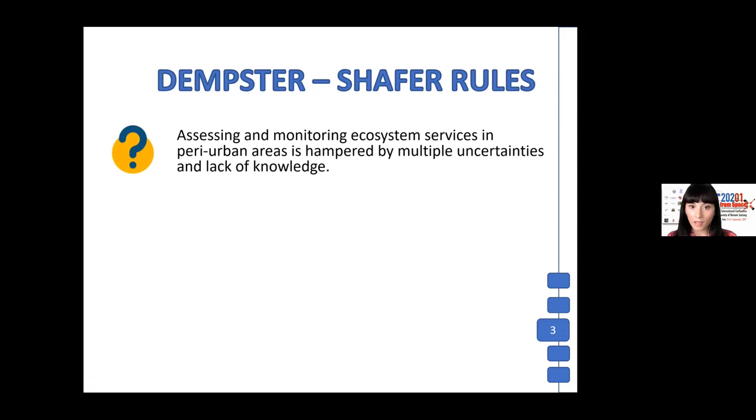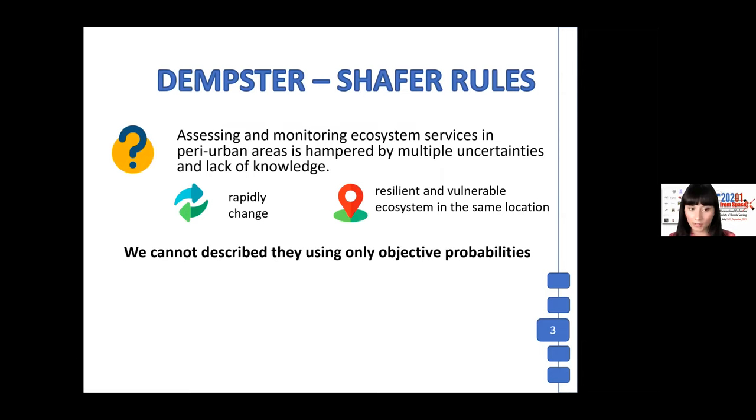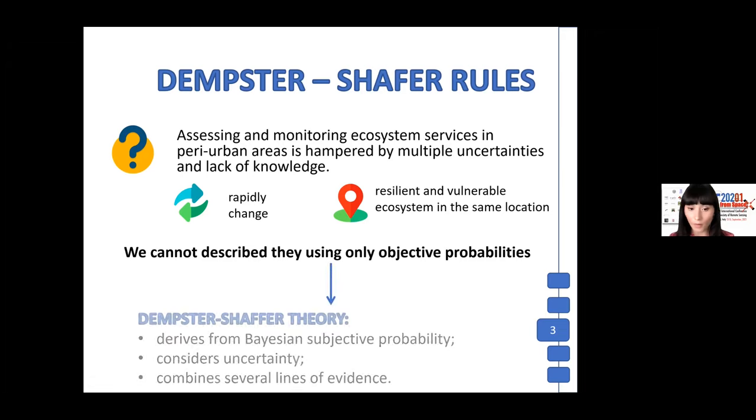Assessing and monitoring ecosystem services in the peri-urban areas is hampered by multiple uncertainties and lack of knowledge. In these areas, we have rapid changes, and it is very frequent to have resilient and vulnerable ecosystems in the same location. For this reason, we cannot describe it today using only objective probabilities, and we use Dempster-Shafer theory, because it varies from Bayesian subjective probability, considers the uncertain topic, and combines several lines of evidence.